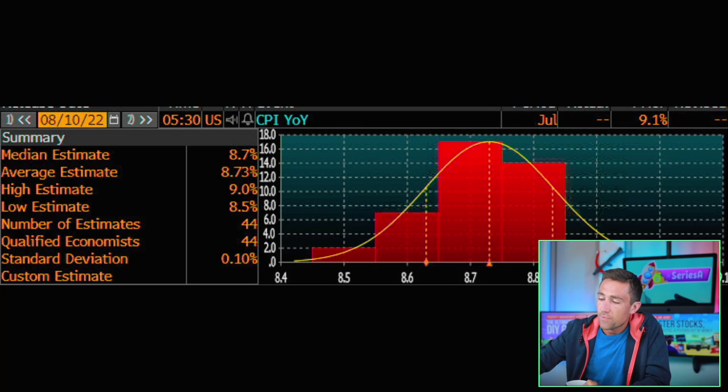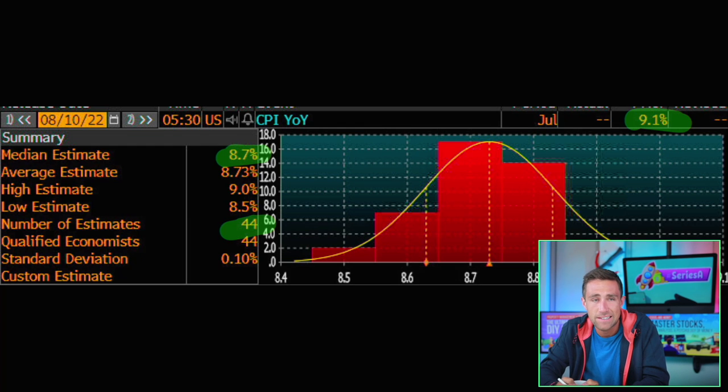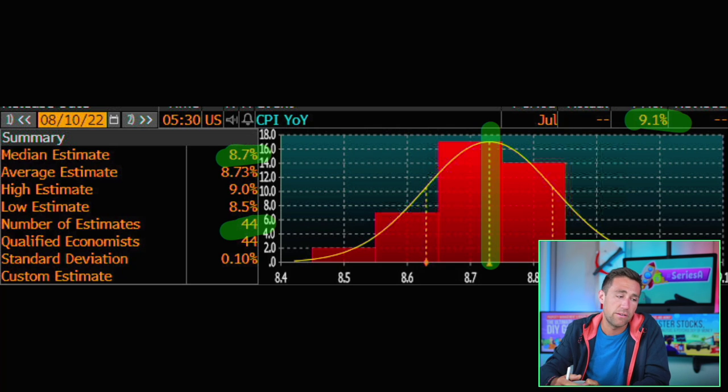And the expectation is that tomorrow's inflation numbers headline will actually come down from the 9.1% we had previously and go to 8.7%. There are 44 economist projections in on this. The average estimate is that inflation will be 8.73%, right here in the middle of the bell curve.